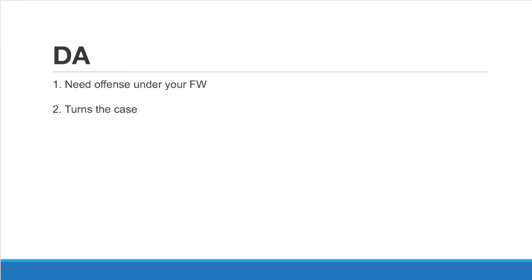The next section is the disadvantages. It's pretty simple — all you need is some offense under your framework, meaning a reason why under utilitarianism not abolishing plea bargaining is best. Second, and less importantly, would be a turns-the-case argument you're able to make with a dis-ad. For example, the terrorism dis-ad has cards explaining why it leads to more civil liberties violations, and you can explain why that's a greater violation of freedom — which undercuts the framework they're reading. It's always strategic to have little things you might fall back on that also make your opponent's job harder in answering arguments.